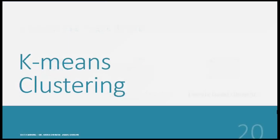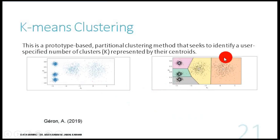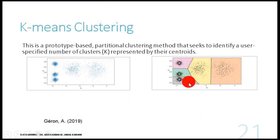Now we start with K-means clustering. It's one of the most famous, well-known algorithms when we talk about clustering. K-means tries to cluster data points into different clusters, and it is partitional — each data point belongs only to a single cluster. It's called prototype or center-based because K-means works by identifying a centroid or center point inside each cluster.